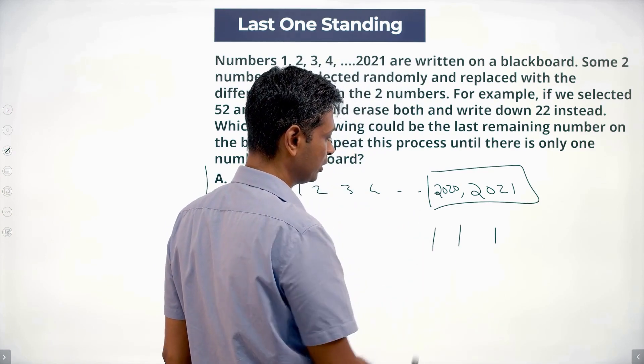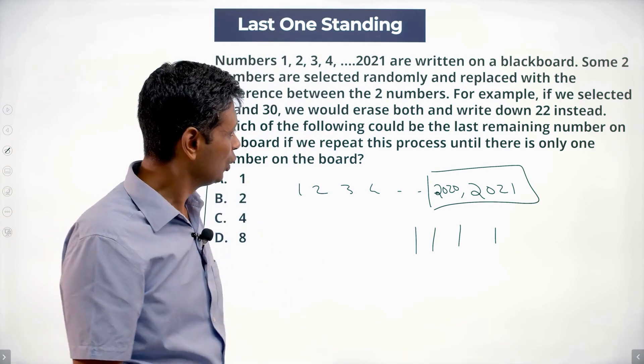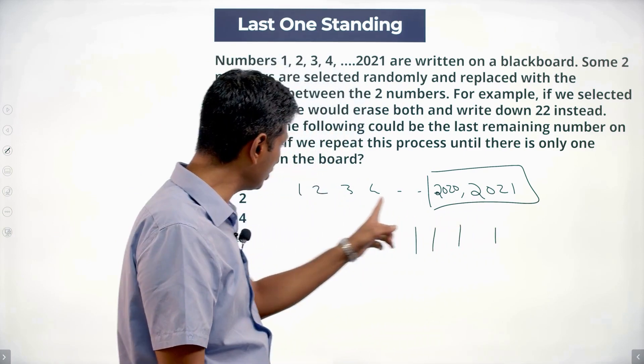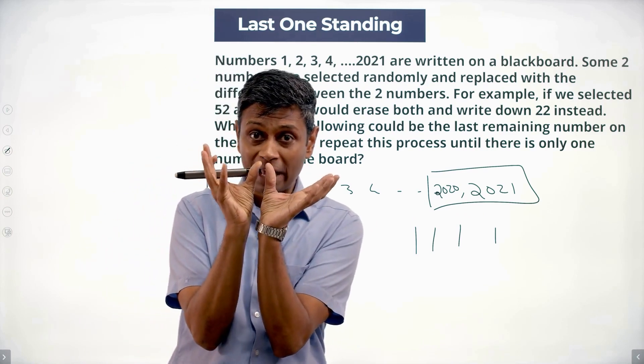17 minus 16 is 1, 15 minus 14 is 1, all of these are 1. 2021 and 2020, I'm replacing it with 1 all the way till 3 minus 2. I'll do pairing it up, every pair gives me a 1.